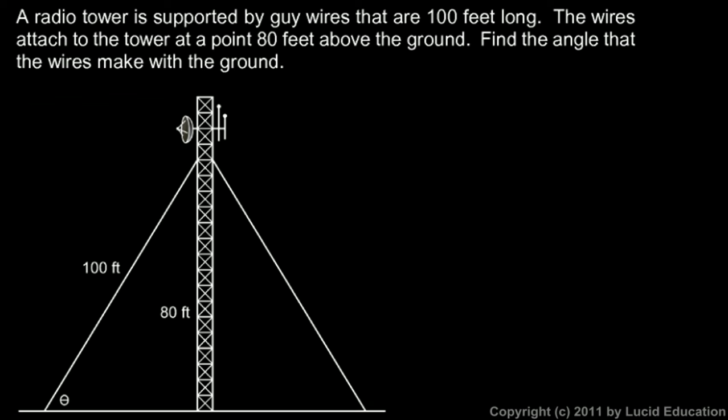And in this problem, we're told that a radio tower is supported by guy wires. That's these wires that are typically run at an angle that support the tower, help keep it from being blown down in a strong wind. In this case, the guy wires are 100 feet long. And the wires attach to the tower at a point 80 feet above the ground. So the ground is down here. And the attachment point there is 80 feet above the ground.